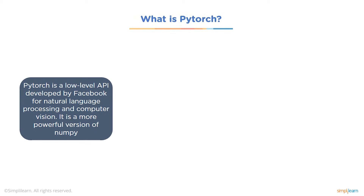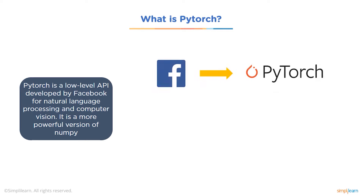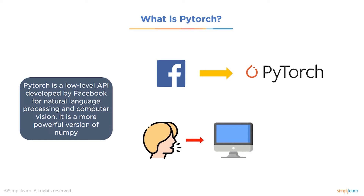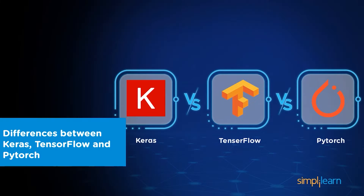Next, let's look at PyTorch. PyTorch is a low-level API developed by Facebook for natural language processing and computer vision — it is a more powerful version of NumPy. It is an open source machine learning library based on the Torch library, primarily developed by Facebook's AI Research Lab, released under the modified BSD license. PyTorch also has a C++ interface in addition to its primary Python interface. It emphasizes flexibility and allows deep learning models to be expressed in basic Python, and is mainly used for NLP and computer vision.